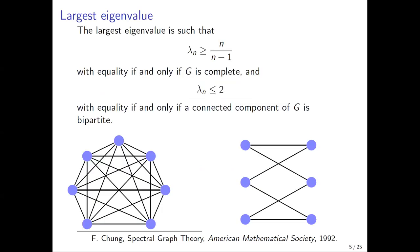The largest eigenvalue has a nice geometric interpretation: it is always between n/(n−1) and 2. It equals n/(n−1) if and only if the graph is complete — meaning all vertices are connected — and it equals 2 if and only if a connected component of G is bipartite, meaning the vertex set can be decomposed into two sets with no edges between vertices in the same part. In general, for a connected graph the largest eigenvalue tells us how much between being complete and being bipartite the graph is.